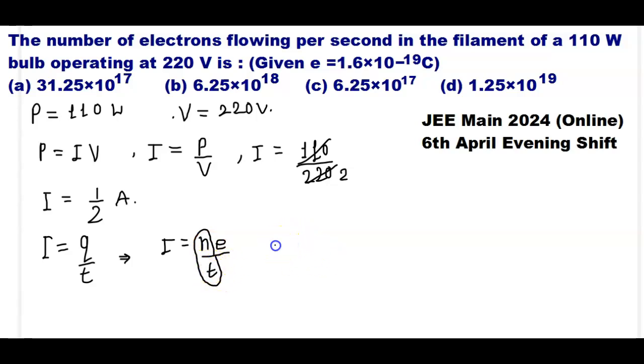Here N by T value I have to calculate. I have already calculated the I value as 1 by 2.